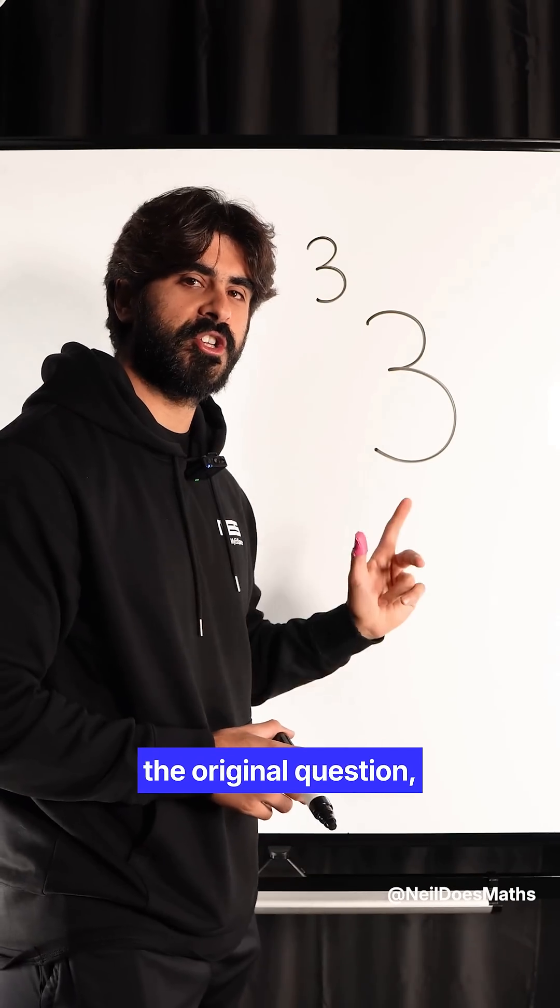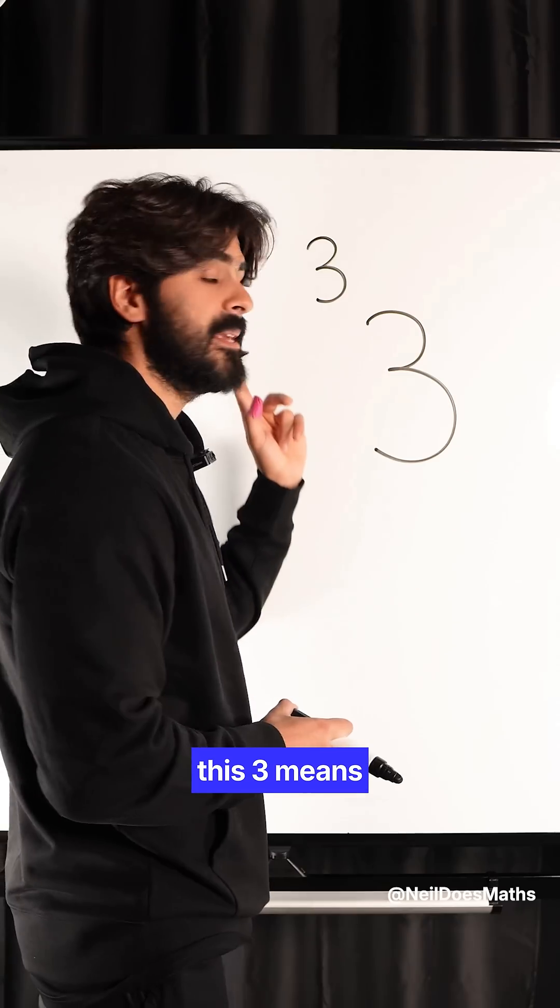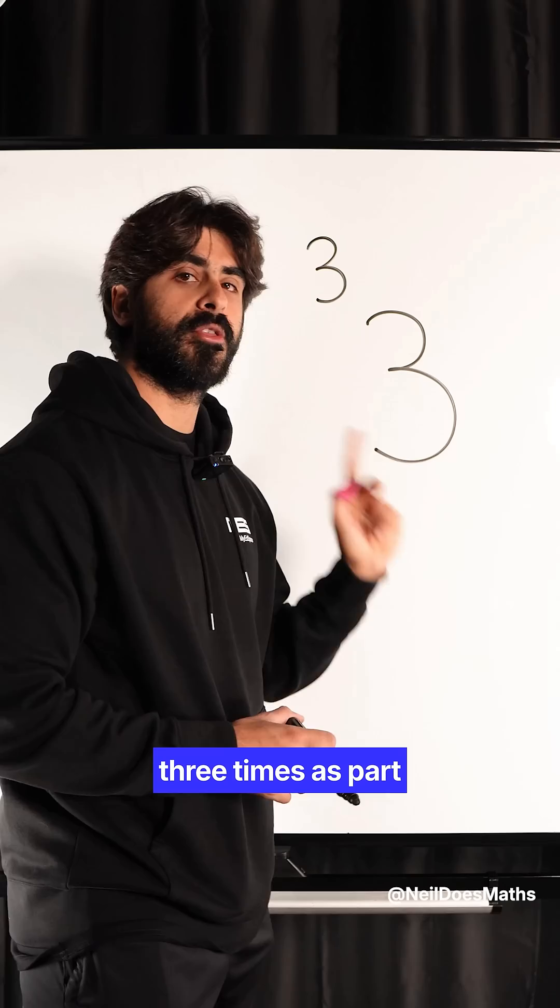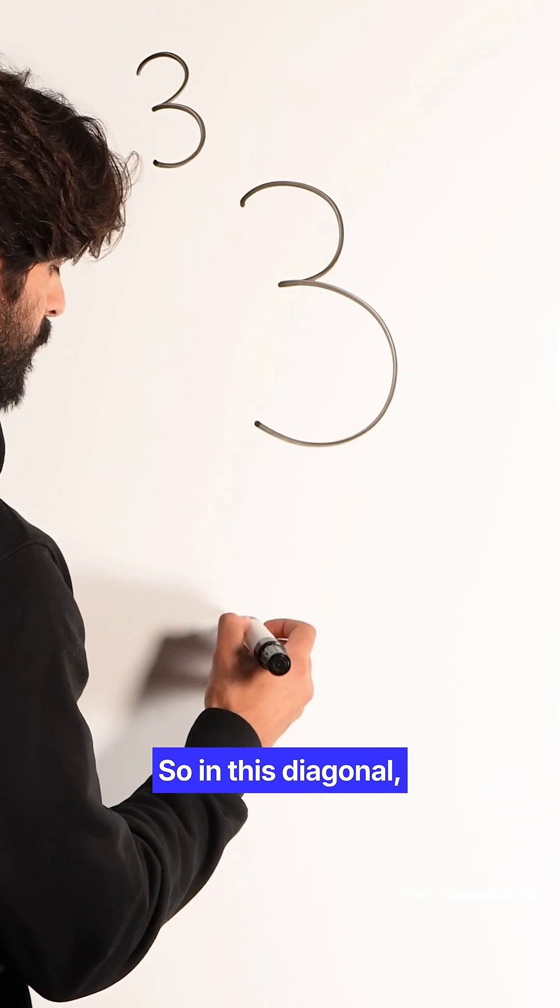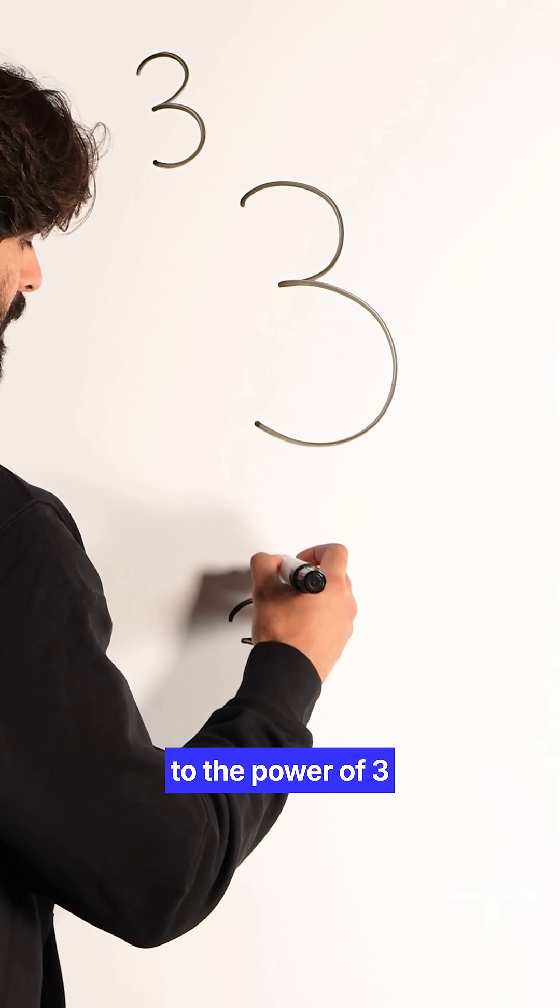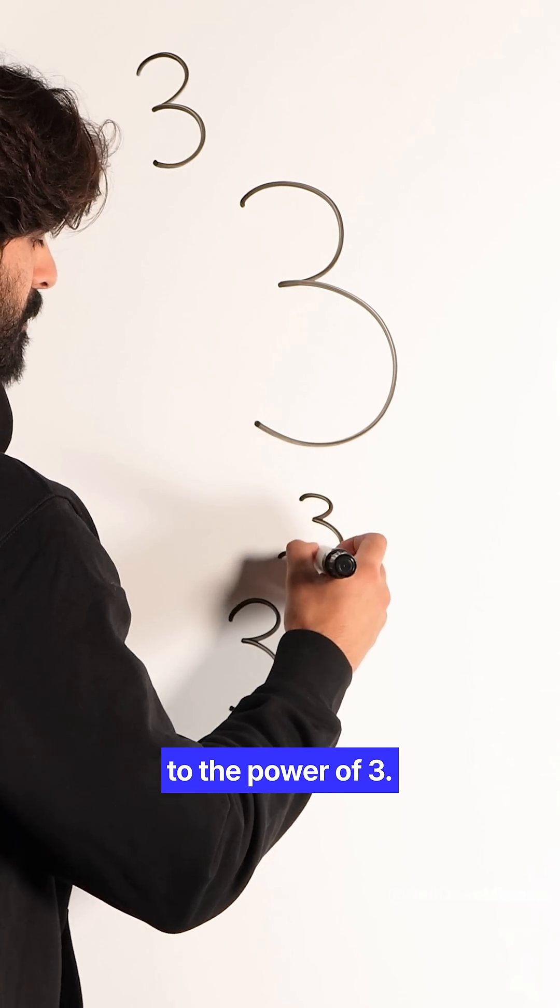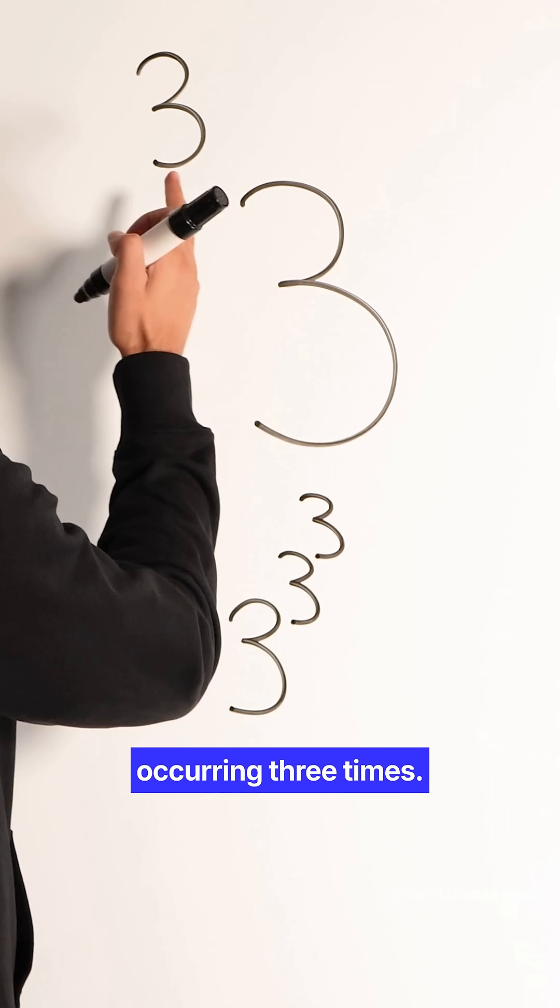So going back to the original question, this three means to tetrate this number three times as part of a power tower. In this diagonal, we have 3 to the power of 3 to the power of 3. You can see the number three is occurring three times.